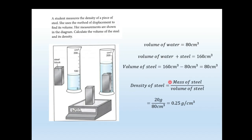A student measures the density of a piece of steel using the displacement method. Her measurements are shown in the diagram. The volume of water is 80 cm³ and the volume of water plus steel is 160 cm³, so the volume of steel is 80 cm³. Density of steel equals mass divided by volume: 20 grams divided by 80 cm³ equals 0.25 grams per centimeter cube.